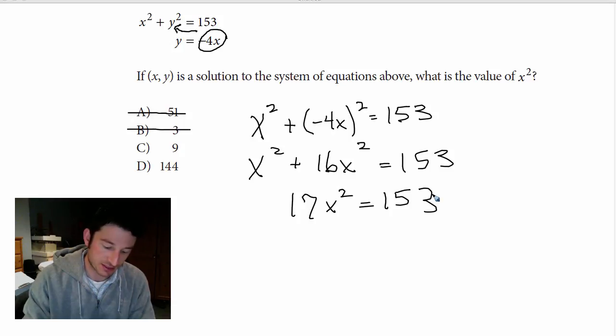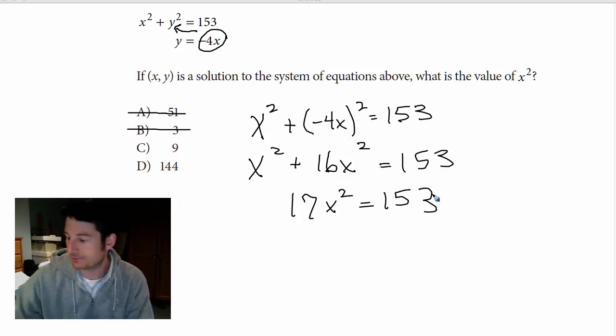Let's test it. 153 divided by 17 is 9. So we get x squared equals 9.